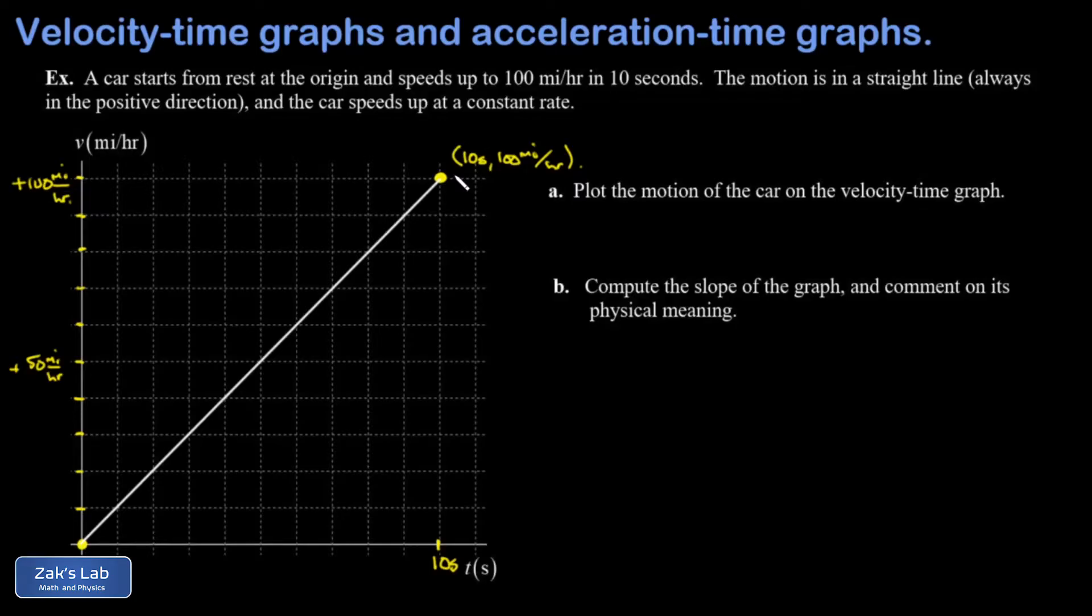In Part B, we're asked to compute the slope of this graph and then comment on the physical meaning of that slope. So we look at the rise and the run. The rise here, the change in the vertical coordinate, is plus 100 miles per hour. And the run, that's the change in the horizontal coordinate, is plus 10 seconds. So I get the slope, and I'm careful to keep the units on this.